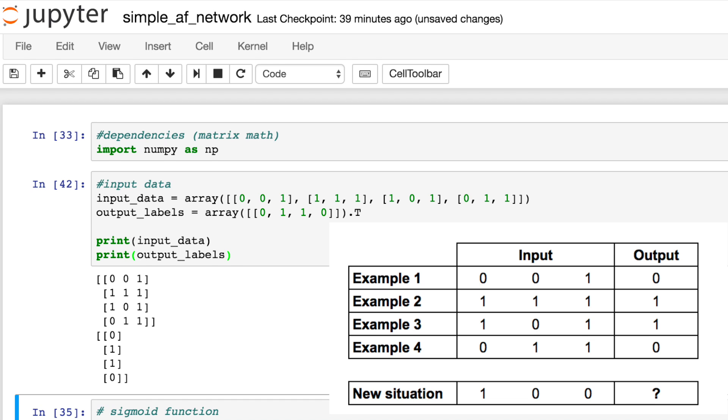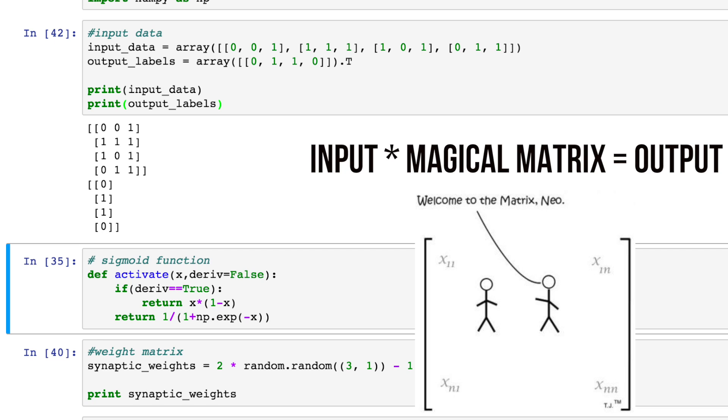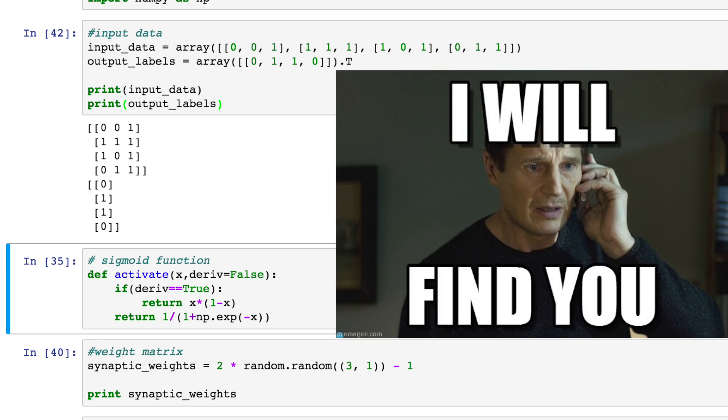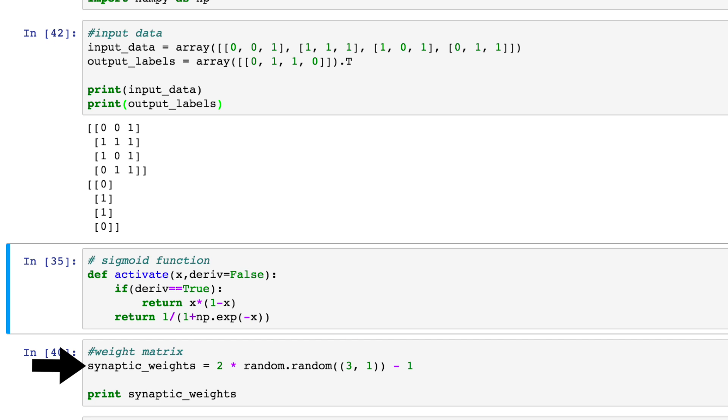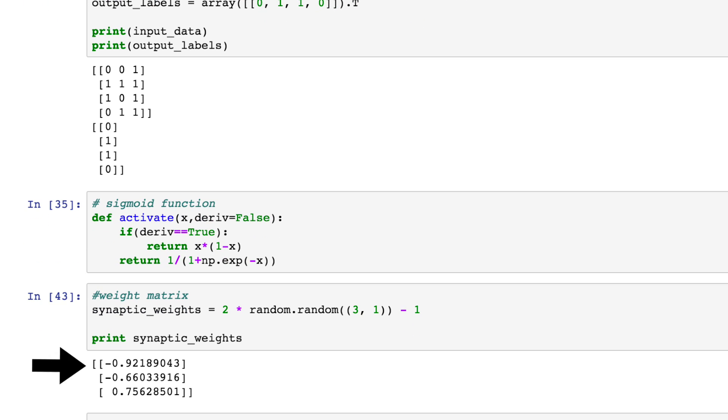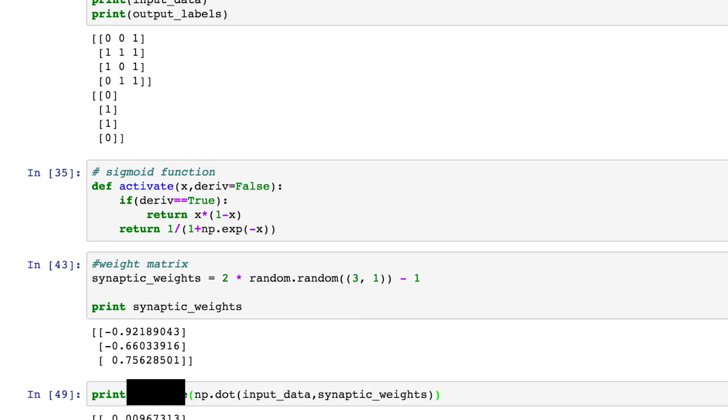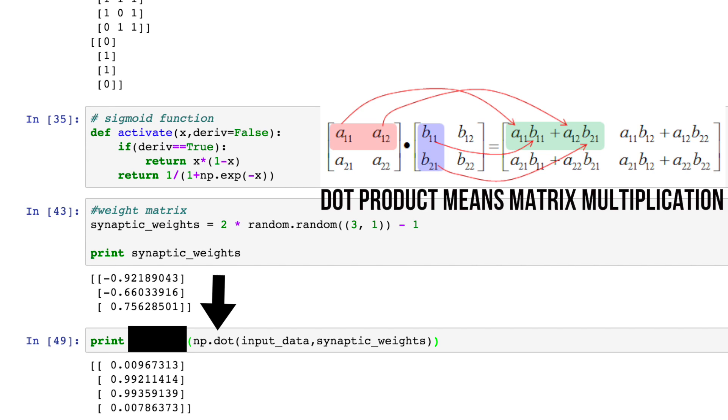So how do we learn this mapping? Imagine there existed a matrix such that every time we multiplied our input data by that matrix, the result would give us the correct output every time. That'd be pretty awesome, right? That's what we're trying to do, find that matrix, that coefficient of the function we're trying to learn. We'll call it our weight value, so we'll initialize it as a matrix of random values. Eventually, we want this matrix to have the ideal values, values such that when we compute the dot product between our input data and this matrix, it will give us the correct output.